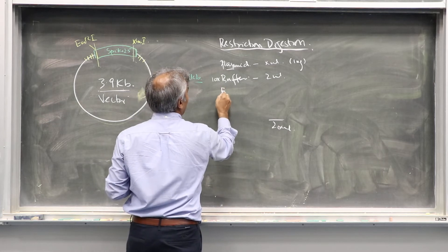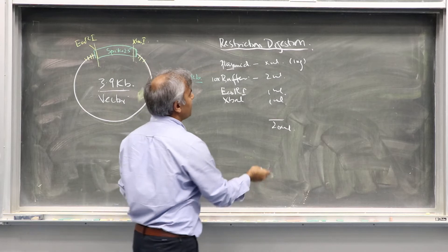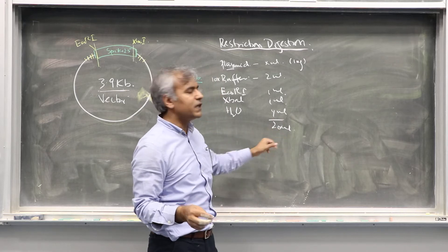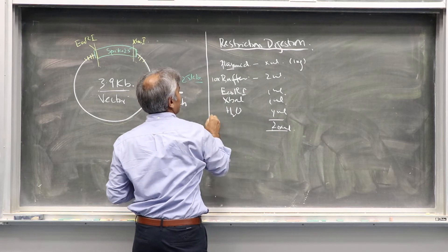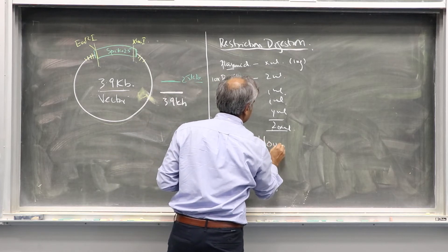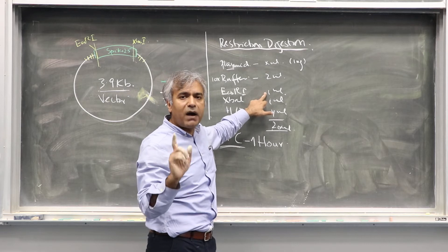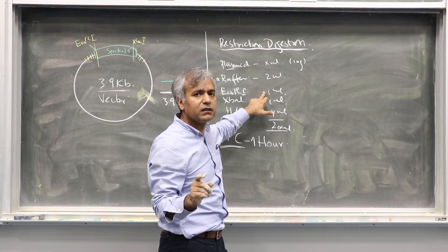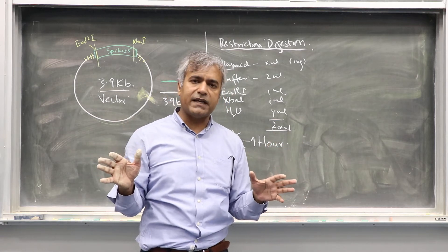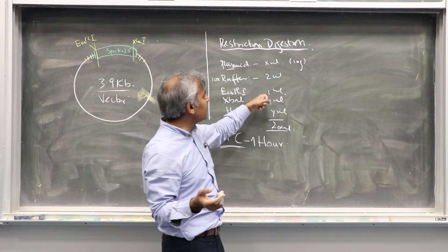We add EcoR1 — 1 microliter — and XbaI — 1 microliter — then add water to make a total of 20 microliters. We incubate this reaction at 37°C for one hour. I would advise you to go and read why I used 1 microliter of restriction enzyme and not 3 microliters. You should read what 1 unit of a restriction enzyme means. Think of this as an assignment.